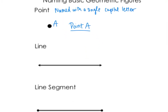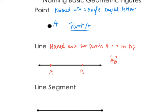A line is a path that extends forever in both directions. It's named with two points and the line symbol on top. So if we're looking at this line and there are two points on it, say points A and B, the way we would name this line is AB with a line symbol on top, or you can switch the order and say BA. The order of the letters does not matter.